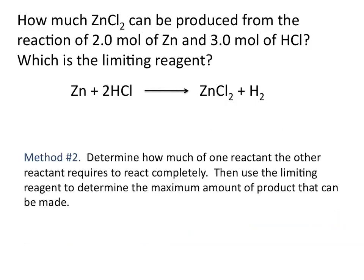Another method you can use to determine the limiting reagent is to determine how much of one reactant the other reactant requires to react completely. Then you can use the limiting reagent to determine the maximum amount of product that can be made. In method one, we determined how much product could be made individually from each reactant assuming excess of the other. From those amounts, we could determine the limiting reagent. In this method, we determine the limiting reagent first and then use it to calculate the theoretical yield. You can use whichever method makes more sense to you, and in either case you end up doing two calculations.